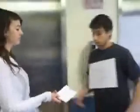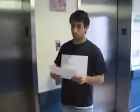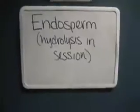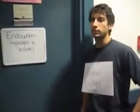The aleurone layer sends enzymes into the endosperm. These enzymes break down starch into glucose through a process called hydrolysis. Just sending my enzymes in there to break down some glucose.